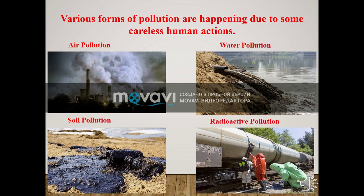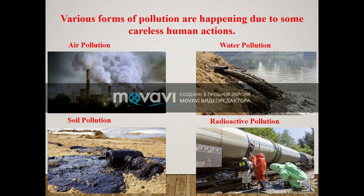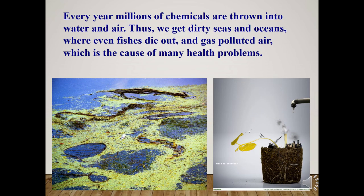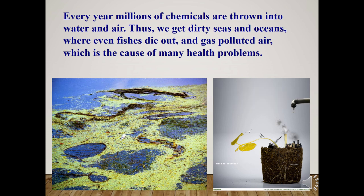Various forms of pollution are happening due to some careless human actions. For example, they are air pollution, water pollution, soil pollution, and radioactive pollution. Every year millions of chemicals are thrown into water and air, thus we get dirty seas and oceans where even fish die out and gas-polluted air, which is the cause of many health problems.